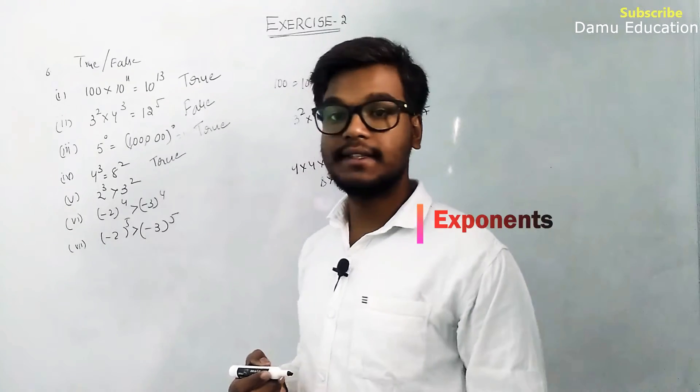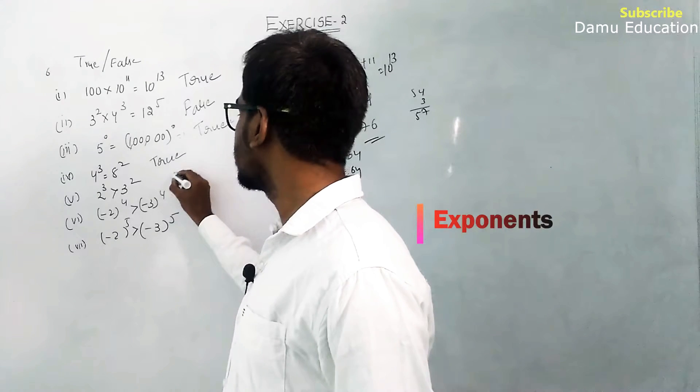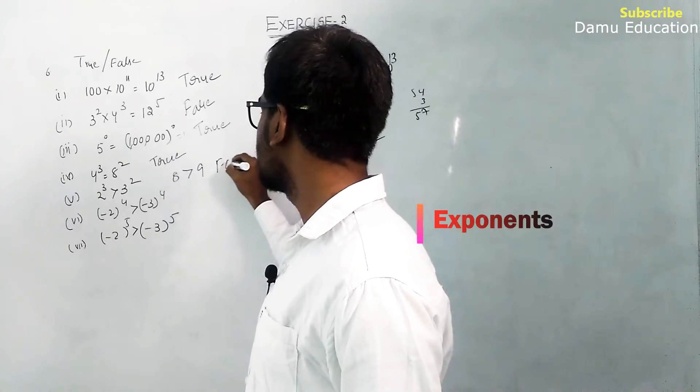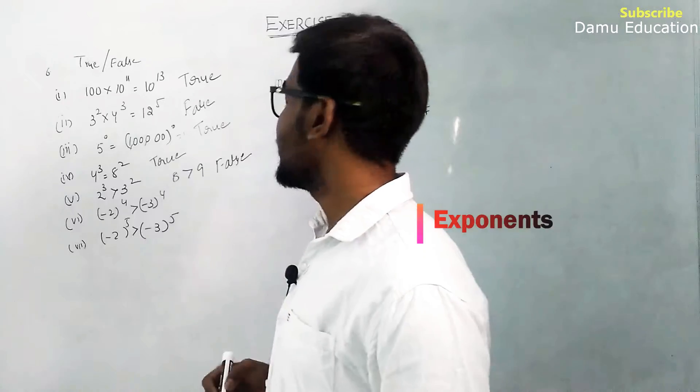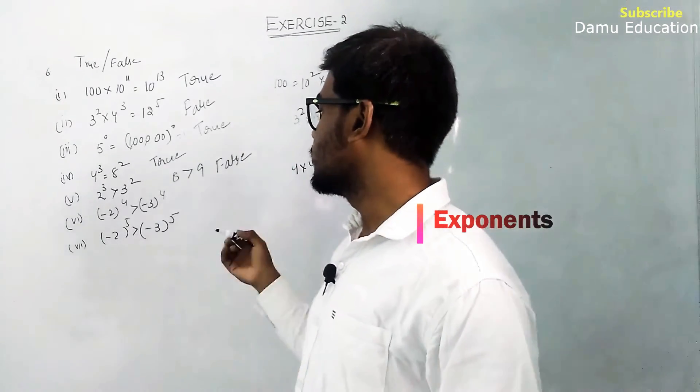Next: 2³ > 3². 2³ is 8 and 3² is 9. This is false because 8 is not greater than 9; 8 is less than 9.